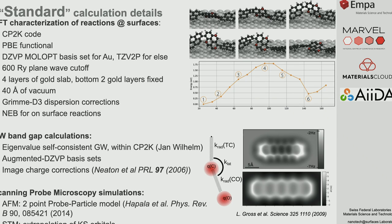From the computational point of view, we do standard DFT calculations. Always keep in mind that these objects are fabricated and characterized on a metallic substrate. So whenever possible—when simulating chemical reactions on the substrate, or comparing STM and atomic force microscopy images between experiment and simulation—we do DFT calculations including both the substrate and the adsorbate, reaching system sizes of up to 2,000 atoms. For atomic force microscopy, we additionally use an empirical model that mimics the CO-functionalized cantilever tip.